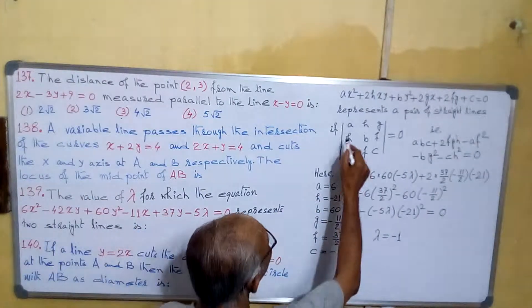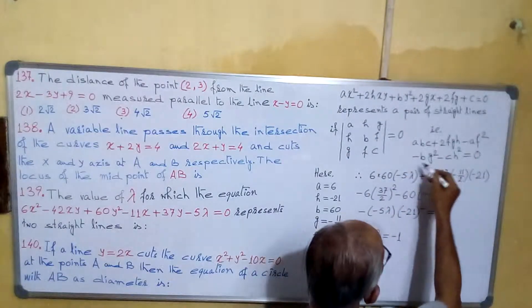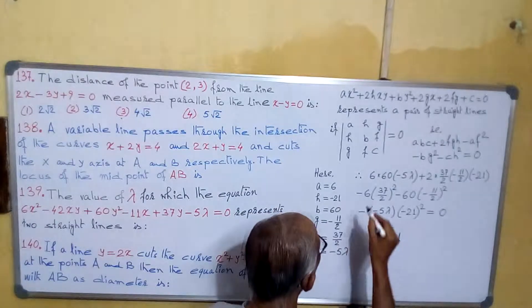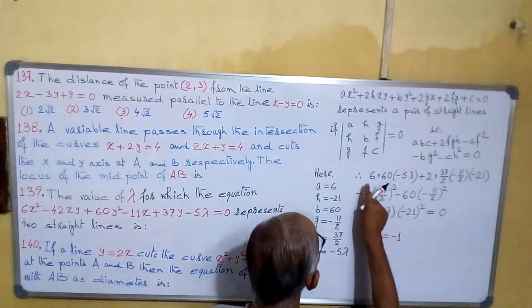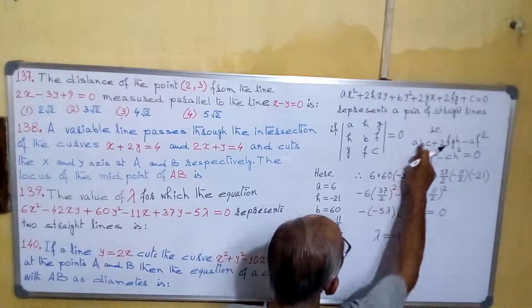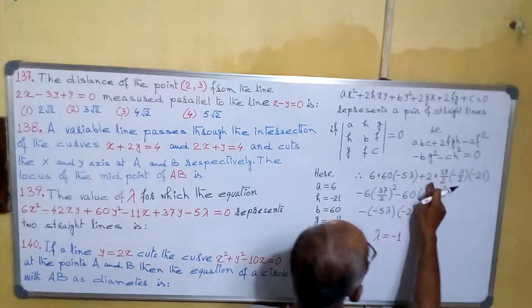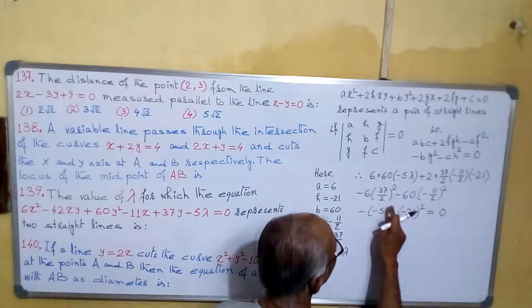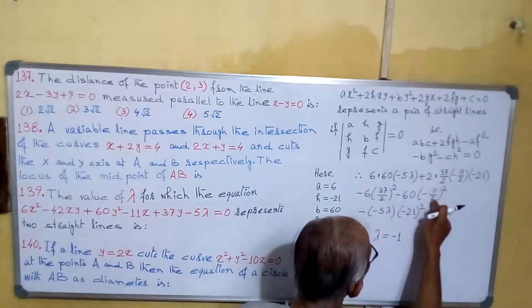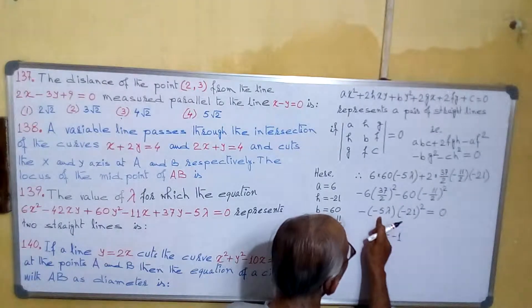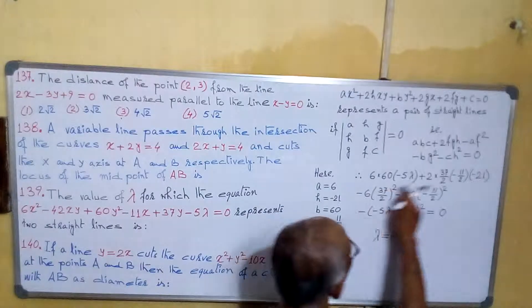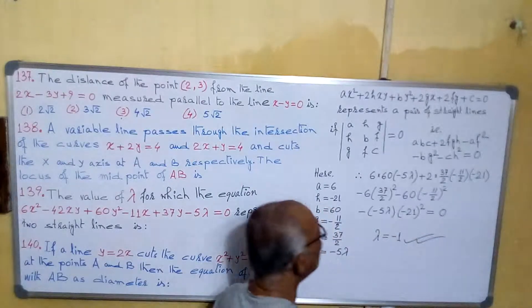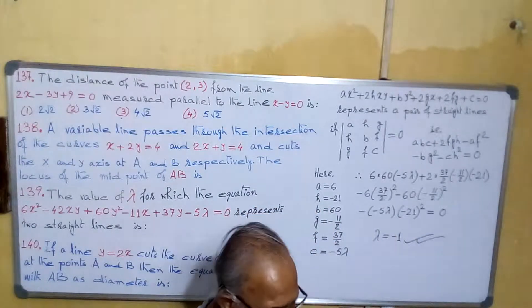Using these values either in the determinant or in the equation, we have to find the value of lambda. So putting all these values into 6·b·c + 2fgh − a·f² − b·g² − c·h² equals to 0, we will get lambda equals to minus 1. And this will be our answer.